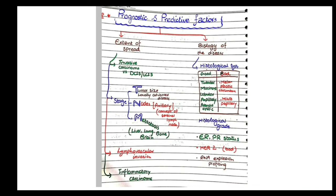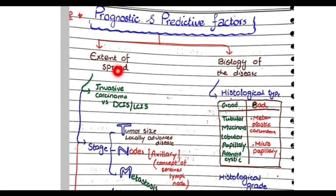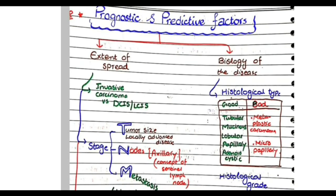As there are a lot of these factors, I have classified them into two subcategories. One is the extent of spread, that determines how far the tumor has spread, and the second is the biology of the disease, which means how does the tumor tissue appear, what is its histology, what is its molecular characteristics.